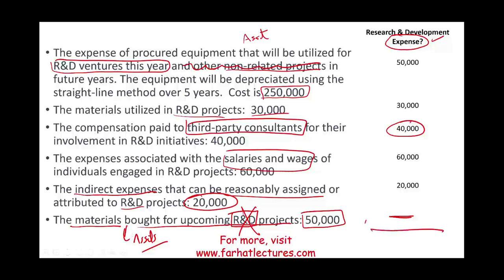So the total R&D expense based on these items is: $50,000 (depreciation) + $30,000 (materials used) + $40,000 (consultant) + salaries + indirect expenses = $200,000. Remember: the equipment contributes only $50,000 to R&D expense. Go to FarhatLectures.com for additional MCQs, true/false questions, and exercises on research and development expense. Good luck, study hard, and invest in yourself.